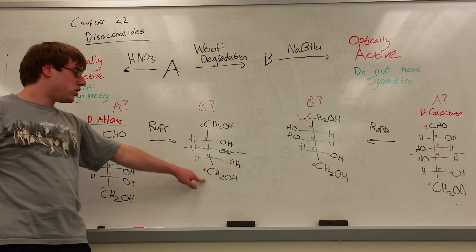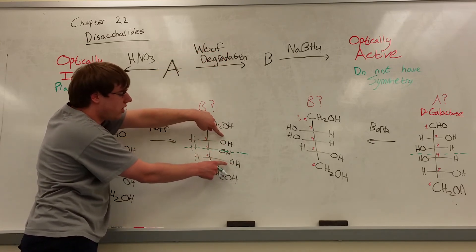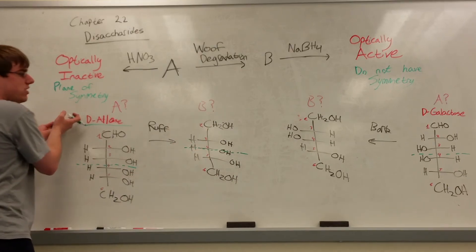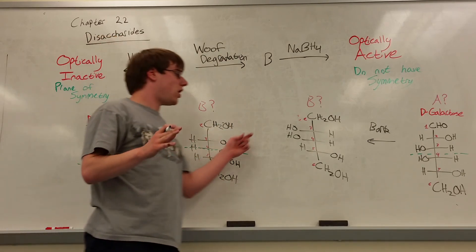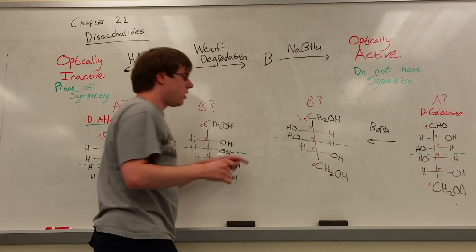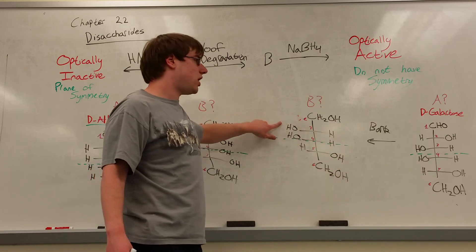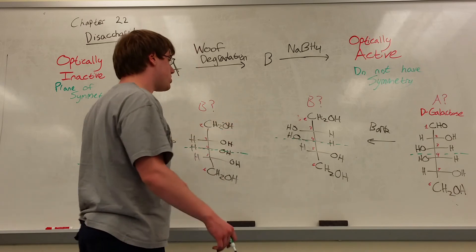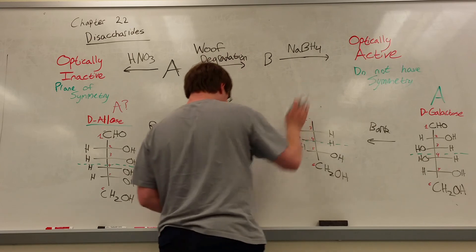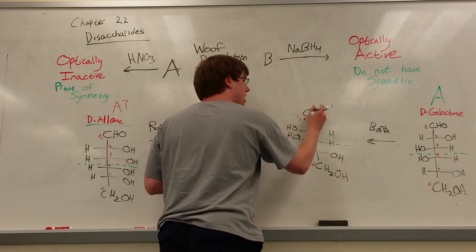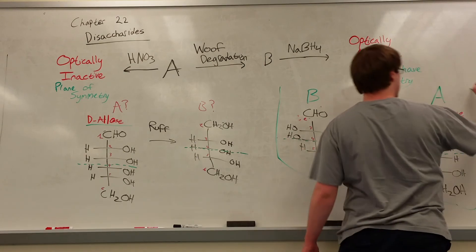For the D-allose Ruff degradation product, after NABH4 there is a clear plane of symmetry through carbon four — this would be optically inactive, so D-allose is ruled out. For the D-galactose Ruff degradation product, cutting straight through carbon four gives no plane of symmetry because one OH is on the right and one is on the left — this is optically active. Therefore, A must be D-galactose and B is the aldopentose from its Ruff degradation.